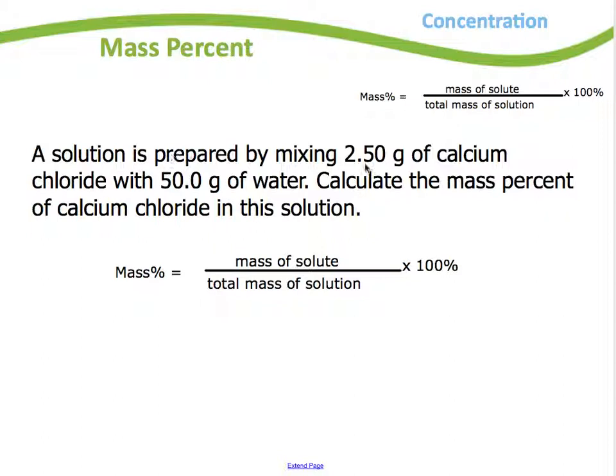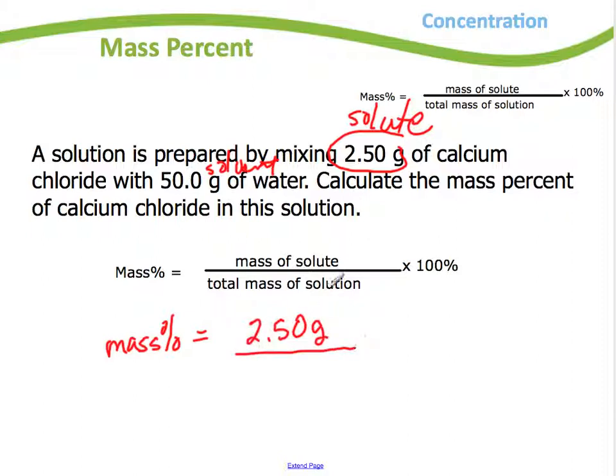Here's one where it says solution prepared by mixing 2.50 grams of calcium chloride, so the 2.50 grams that would be my solute, and they're dissolving it in 50 grams of water. So 50 grams of water would be my solvent. To calculate the mass percent, just use my formula. So mass percent is equal to the mass of solute, 2.50 grams, divided by the total mass of the solution. So my solvent weighs 50, my solute weighs 2.50, so I have to add those two. So 52.50 grams times 100.